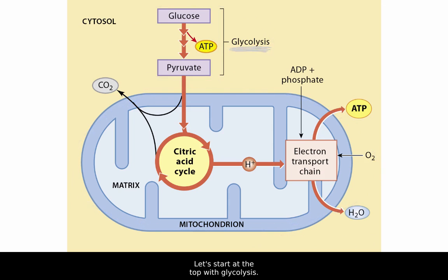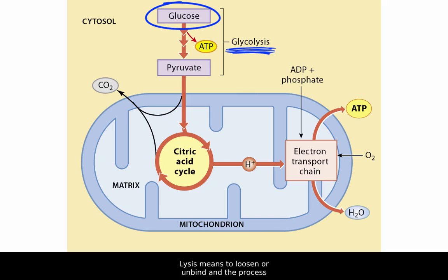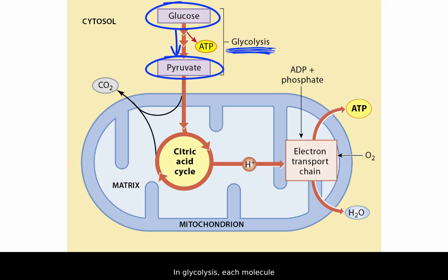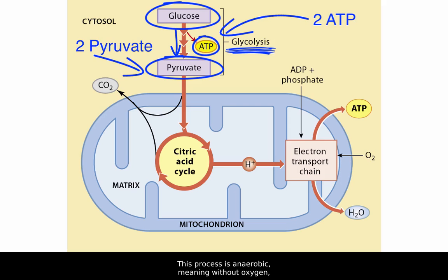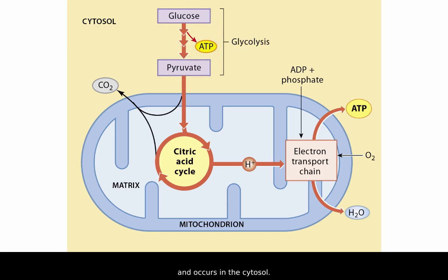Let's start at the top with glycolysis. Here we see glucose entering the process. Lysis means to loosen or unbind, and the process of glycolysis unbinds or breaks down glucose into pyruvate. In glycolysis, each molecule of glucose yields two ATP molecules as well as two pyruvate molecules. This process is anaerobic, meaning without oxygen, and occurs in the cytosol.